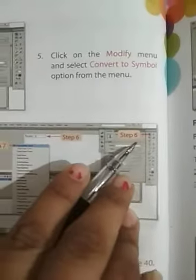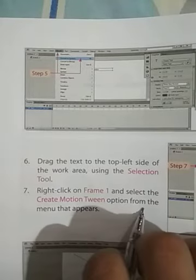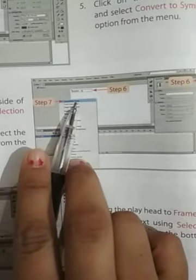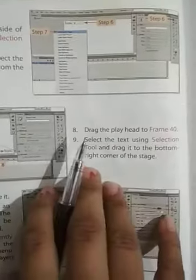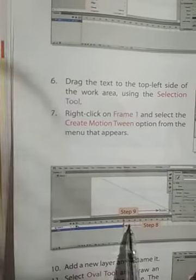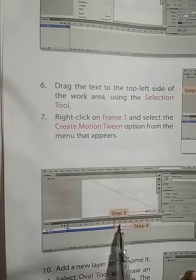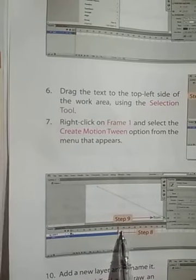Sixth step: right-click on frame 1 and select the create motion option from the menu that appears. Seventh step: create motion option by clicking on the menu. Next, drag the play head to frame 40. This is the eighth step.